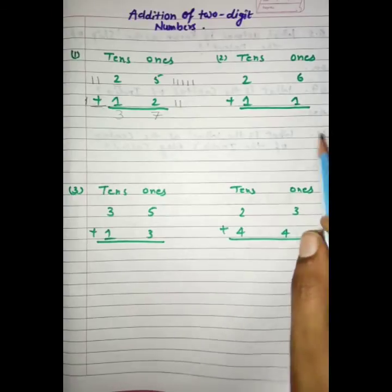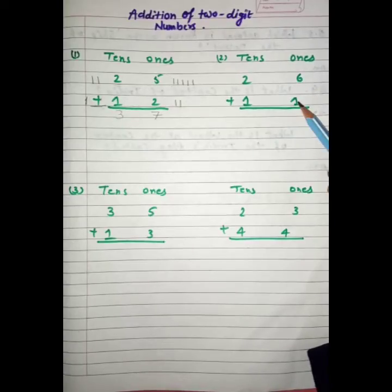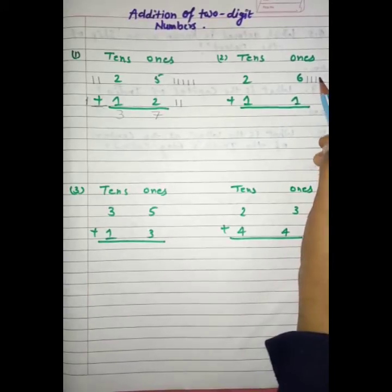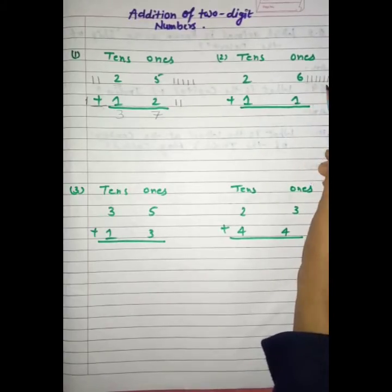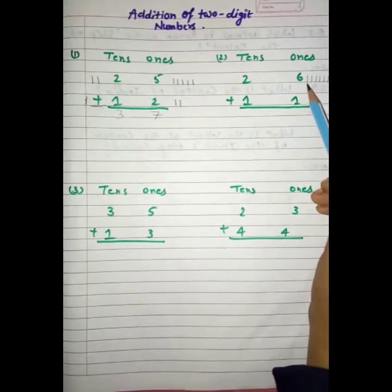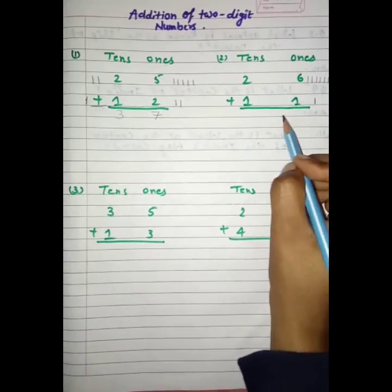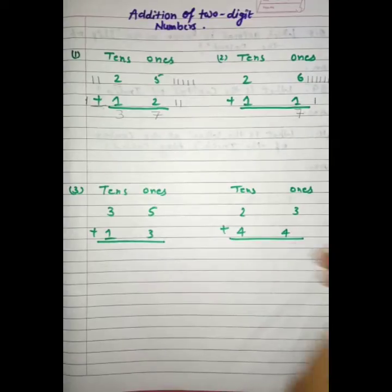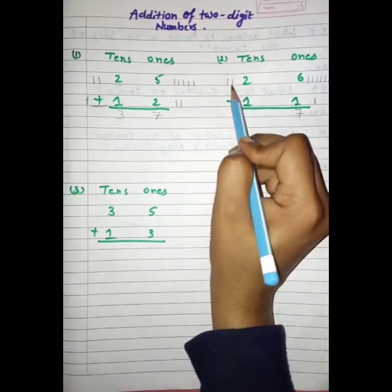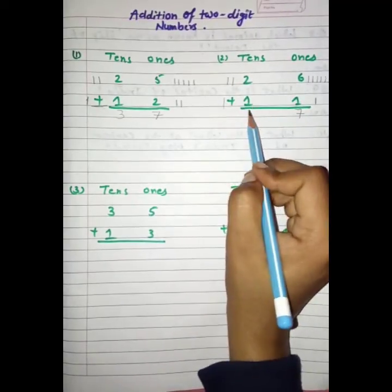Students, see the next question. We have to add 6 and 1. Hame 6 aur 1 ko plus karna hai. We have to draw 6 lines: 1, 2, 3, 4, 5, 6. And here we draw 1 line. Ab hum in lines ko count karen ge: 1, 2, 3, 4, 5, 6, 7. We have 7. Similarly, hum 2 aur 1 ko add karen ge. Draw 2 lines and 1 line, count: 1, 2, 3. We have 3 here.